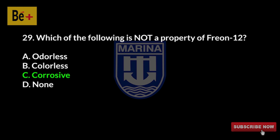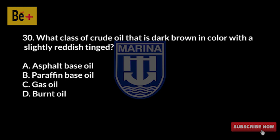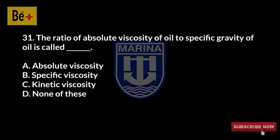What class of crude oil is dark brown in color with a slightly reddish tinge? A) asphalt base oil, B) paraffin base oil, C) gas oil, D) burnt oil. The answer is B, paraffin base oil.